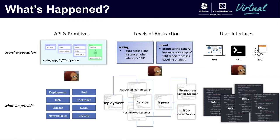The second issue is the level of abstraction. For example, application operators are working on policies like how to do auto-scaling and automatic traffic routing. But what we expose to them are Kubernetes services, ingress, permissions, and Istio virtual services. As Kubernetes experts, it's straightforward for us to assemble them into routing strategies or auto-scaling policies, but these primitives don't make any sense from the application operator's perspective.